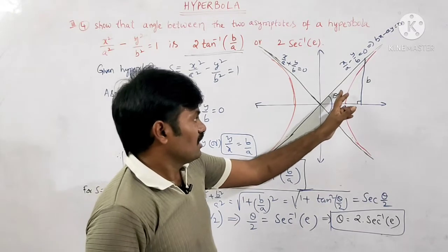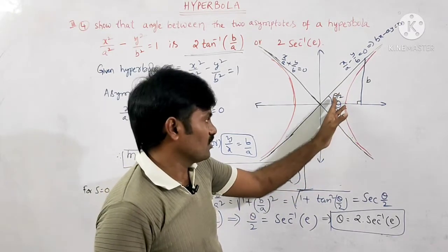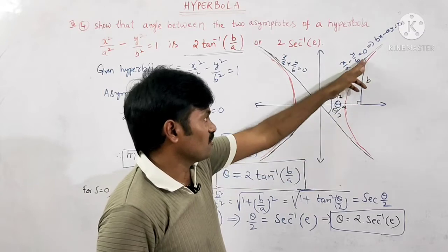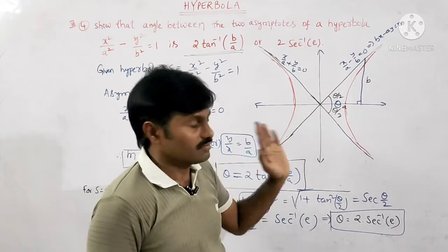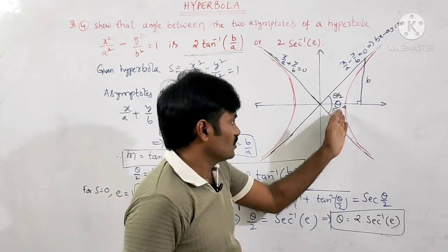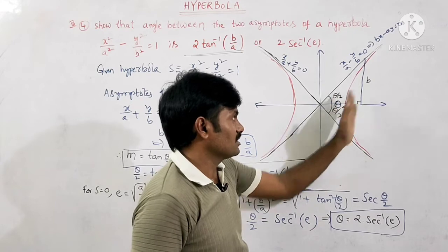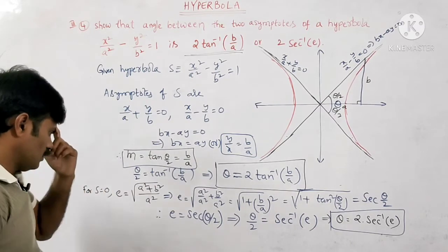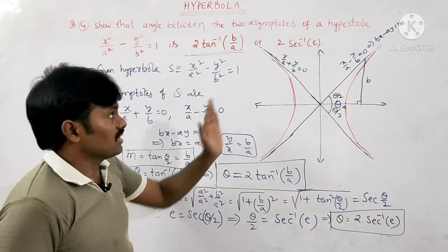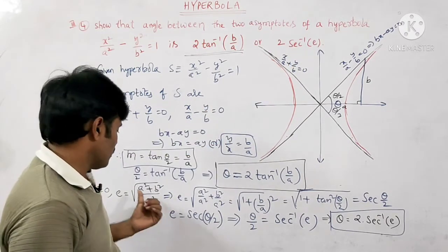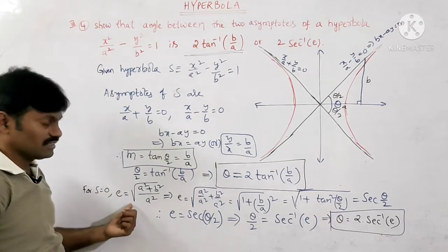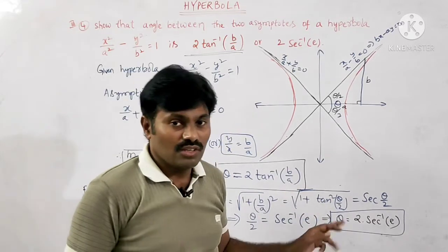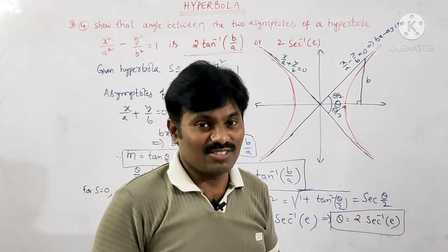We took the angle between the two asymptotes as θ. The transverse axis acts as the angle bisector of the two asymptotes, giving θ/2 on each side. So tan(θ/2) = y/x = b/a. From this, we expressed θ in terms of tan, and then using the eccentricity formula e = √(a² + b²)/a and the identity sec²(θ/2) − tan²(θ/2) = 1, we derived θ = 2·sec⁻¹(e).